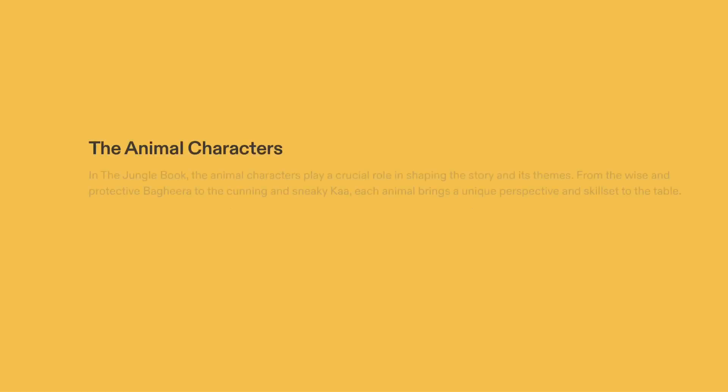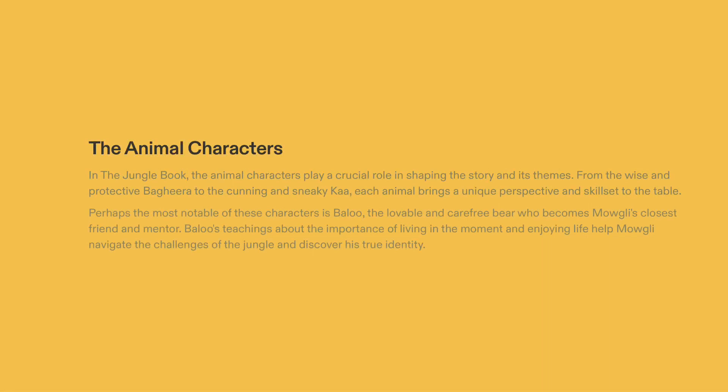The animal characters in Rudyard Kipling's The Jungle Book are an integral part of the story and its themes. Bagheera, the wise and protective panther, and Ka, the cunning and sneaky snake, are just two examples of the unique personalities represented. The most beloved of these characters is Baloo, the fun-loving bear and eventual teacher and friend of Mowgli. Baloo teaches Mowgli the importance of living in the moment and enjoying life, helping him to navigate the challenges of the jungle and discover his true identity.